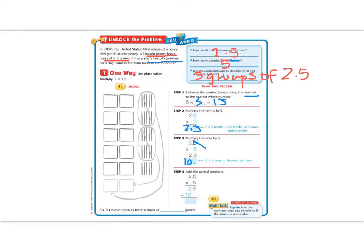And now I'm going to add the two parts together. So 5 plus 0 is 5, 2 plus 0 is 2, and then bring down the 1. And then remember there's a decimal there, so there has to be a decimal here. So the Lincoln pennies have a mass of 12.5 grams.